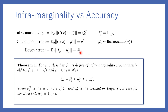We also define the base error delta_0* as the expectation of individuals for whom f_x* and y_x* differ. Given the classifier's error and base error, we show we can bound inframarginality. The upper bound shows that high accuracy (low error rate) implies low inframarginality. The lower bound shows that as c deviates from the highest possible accuracy, its degree of inframarginality also increases.